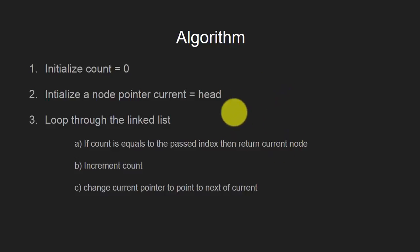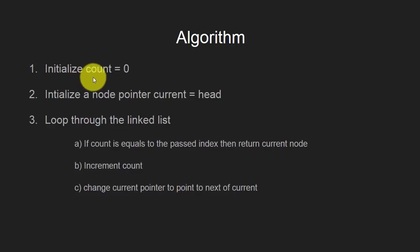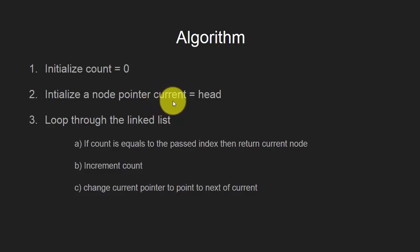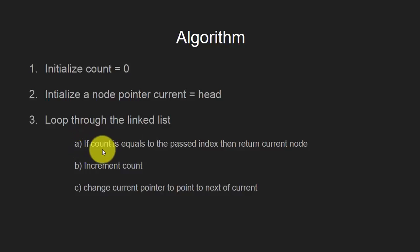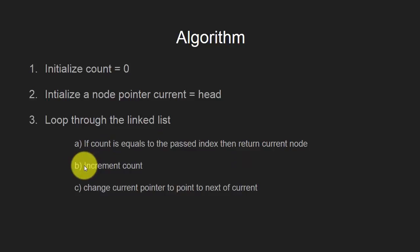Let us now try to understand the algorithm to do this. We will first initialize a variable count to 0 to keep track of the traversed nodes. Then we will initialize a pointer to point to the head node, which will be used for traversing the list. We will loop through the linked list, and if the value of count is equal to the passed index, we will return the current node. Otherwise, we will increment count and change the pointer to point to the next node.